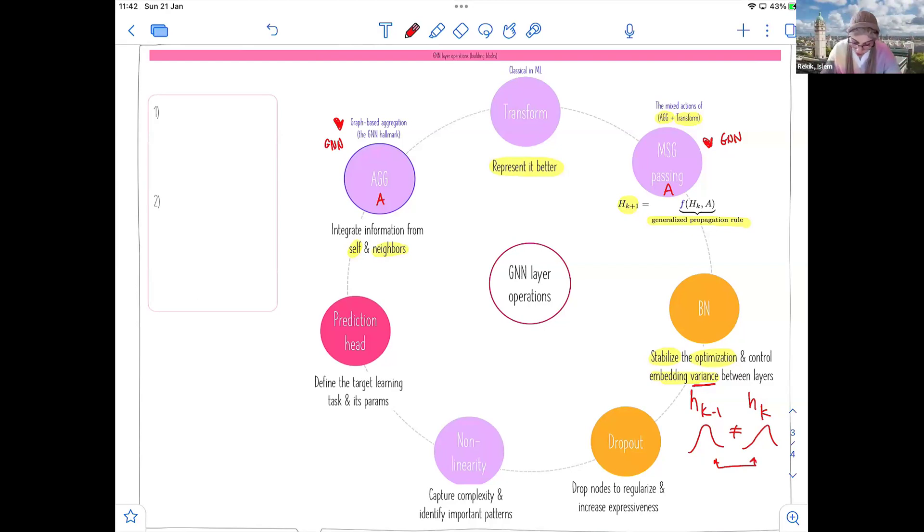The dropout, basically, and here we drop notes to regularize and increase the expressiveness of a GNN model. Dropouts are very used during training, you remove notes, and then you bring them back during testing. So here it kind of decreases, somehow, you don't need to optimize the weight for that node. Dropouts, dropping out nodes, acts as a regularizer for the network loss, and for the GNNs, it also increases the expressiveness of the GNNs, which means we can easily distinguish between different topologies and graph structures.